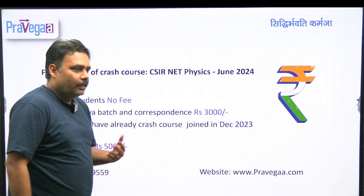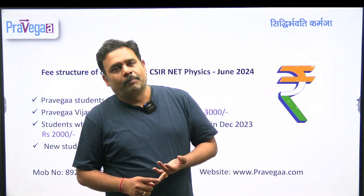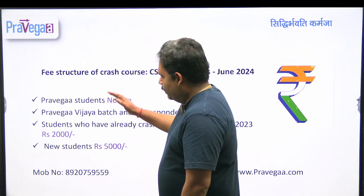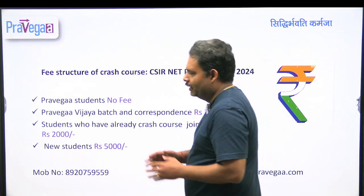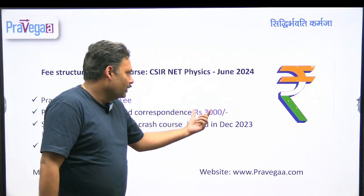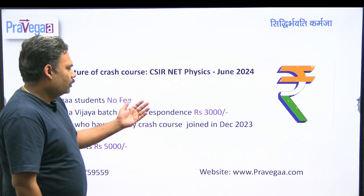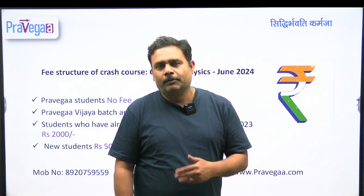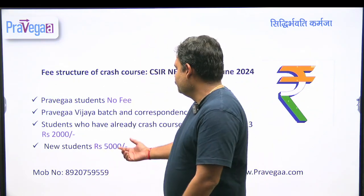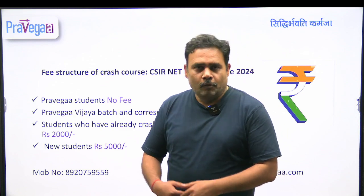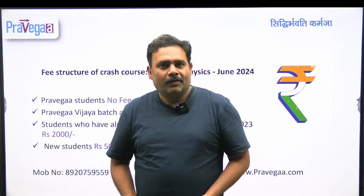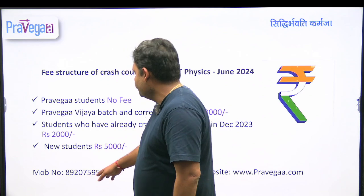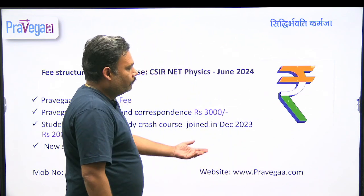This crash course is absolutely free for existing Pravega students — those in offline classes, online classes, or recorded classes do not need to pay anything. For busy batch and correspondence students, the fee is 3,000 rupees. Students who have already joined a crash course earlier, such as in December, and want to join again pay 2,000 rupees. For students joining this crash course for the first time, the fee is 5,000 rupees. The official mobile number for admission and the website Pravega.com are displayed here.